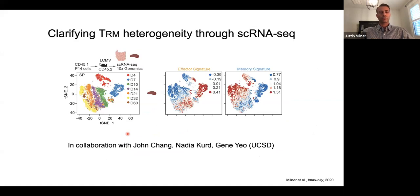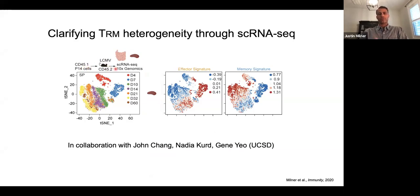To address this question, we used single cell RNA sequencing. This project was in collaboration with John Chang, Nadia Curd, and Gene Yeo at UCSD. We used the P14 LCMV system, which has been introduced in the other two talks. These are T cell receptor transgenic CD8 T cells that specifically recognize an epitope of the LCMV pathogen. These cells are also congenically distinct, so we can transfer them into recipient mice, infect with LCMV, and then track them throughout the response to infection. We sorted P14 cells from the epithelium of the small intestine, or the IEL compartment, as well as the spleen at various time points post-infection.